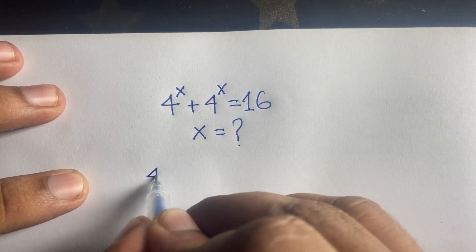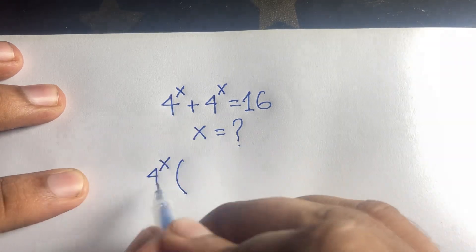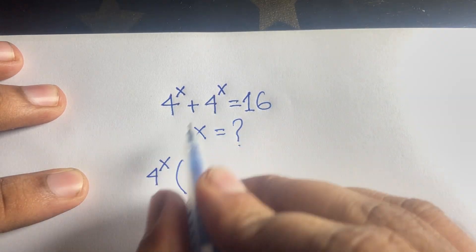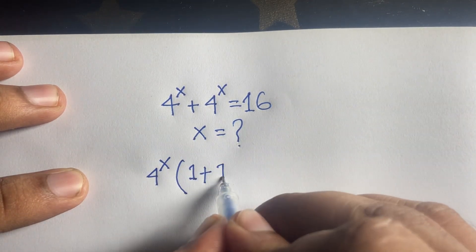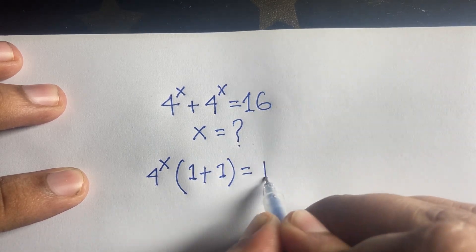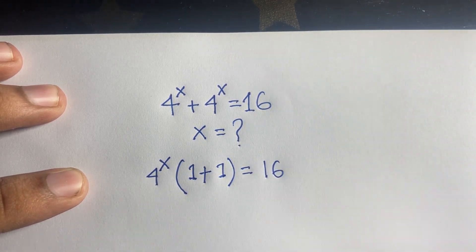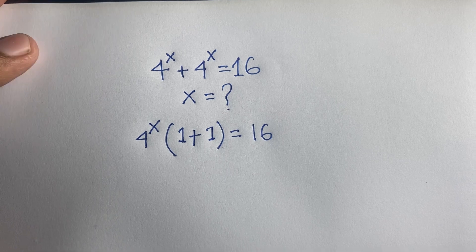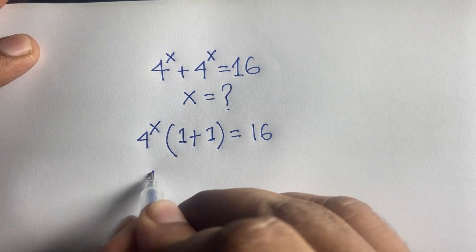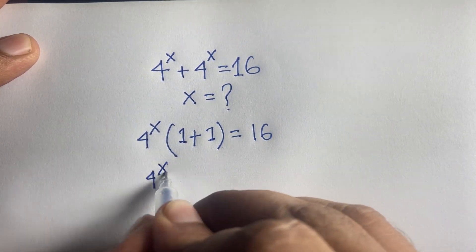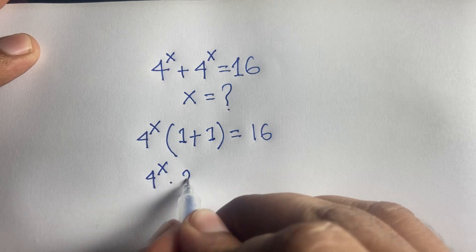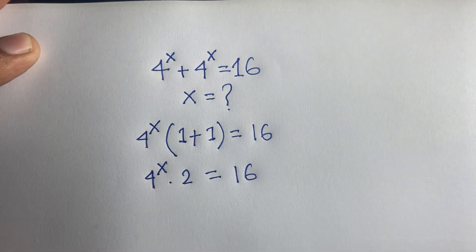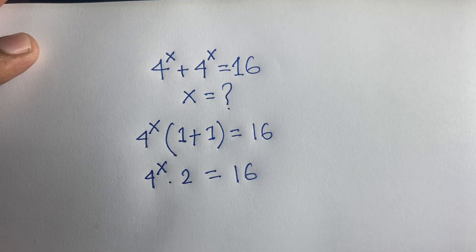So how to solve this question? First of all, I can see that 4 to the power x is common. So factoring it out, we get 4 to the power x times (1 plus 1), which equals 16.